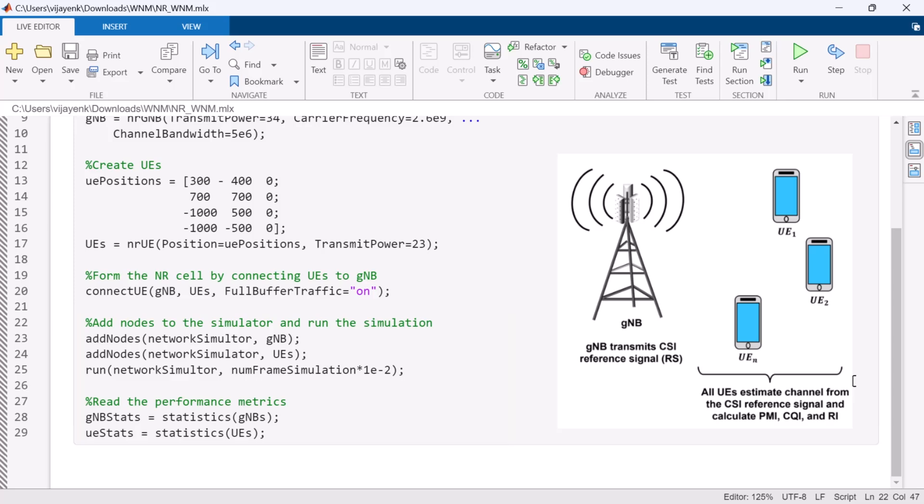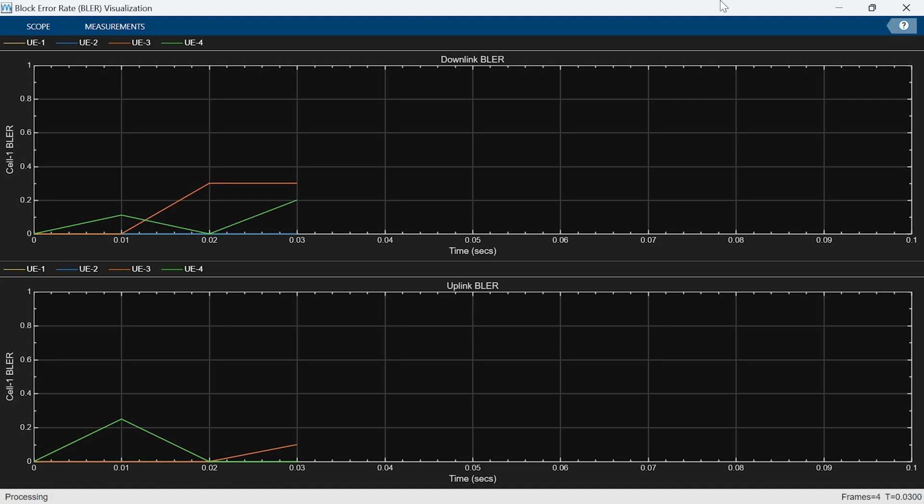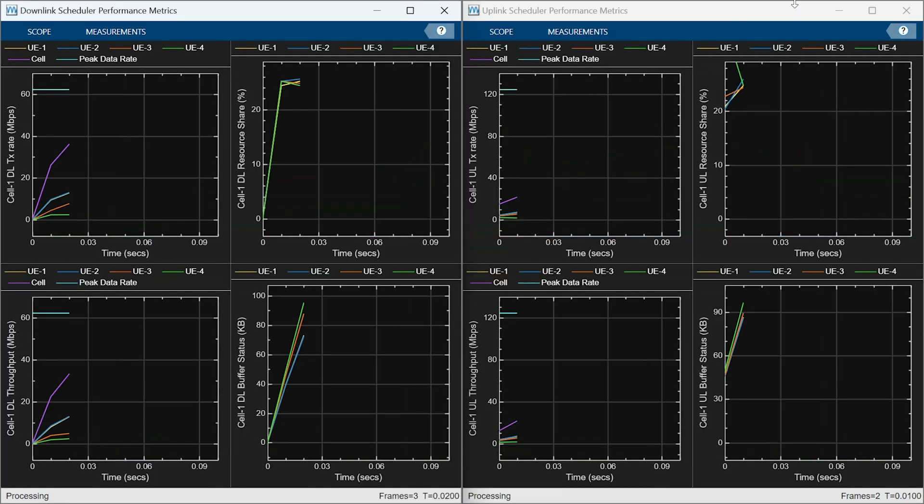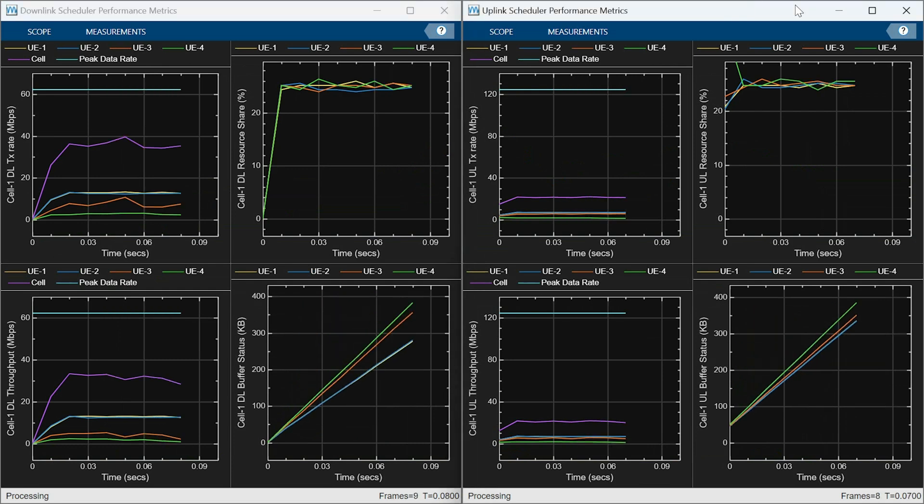But what can we do with a network simulation once we've created it? Well, you can get visualizations for critical parameters, such as block error rate, throughput, data rate for downlink, and uplink for each node.